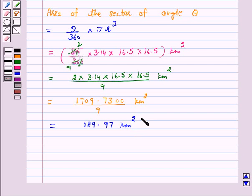Hence, the answer for the above question is the area of the sea over which the ships are warned is 189.97 km squared.